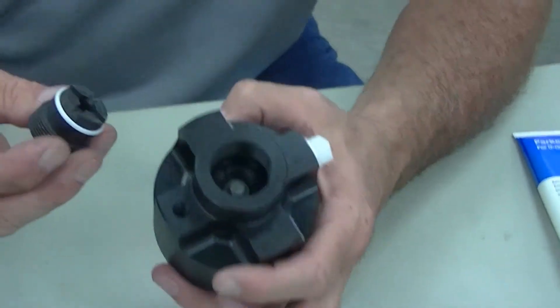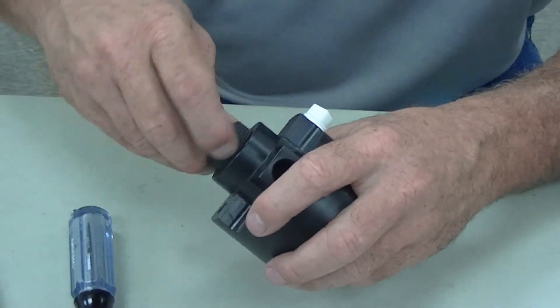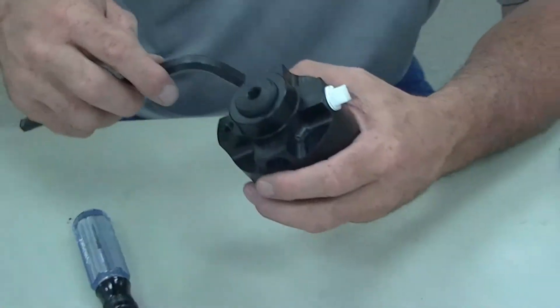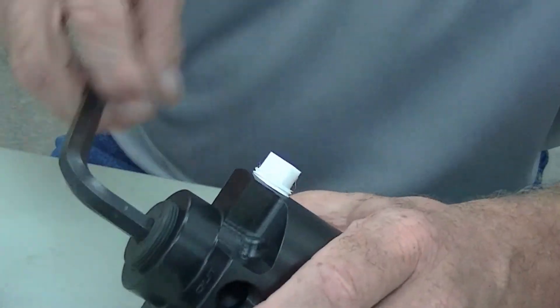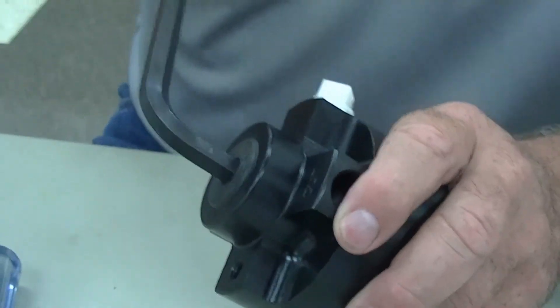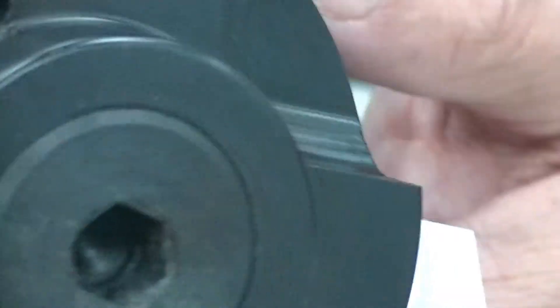On the other side, go ahead and screw this back in, put some O-ring lube on that seal, and then you want to tighten this back up, and you want to leave one thread showing. Just about like that. And that is it.